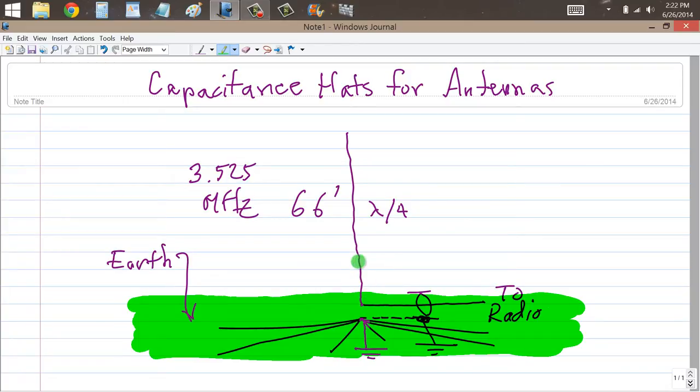Now you can place a loading coil somewhere along this radiator, preferably near the center somewhere, and make that thing shorter. But there's another way you can do that too if you're constrained by how high you can make that thing. You probably have to put guy wires on an antenna this tall. I guess they can make them 66 feet tall without guy wires, but it has to be pretty heavy aluminum tubing.